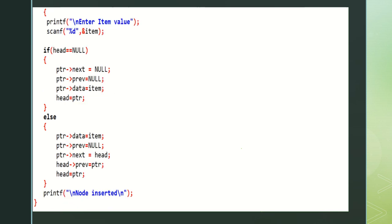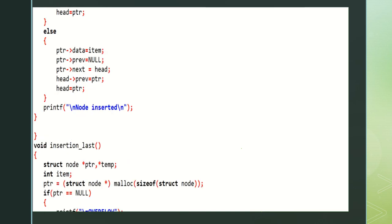If head is equal to null, ptr next is set to null, ptr previous is set to null, ptr data is equal to item, and head is equal to ptr. This executes when the linked list is empty and it is the only node being inserted. If the list already has elements, ptr data is equal to item, ptr previous is set to null — the first node's previous address should be null. Then ptr next is equal to head, head previous is equal to ptr, and head is equal to ptr, making this the first node. Node is inserted successfully.